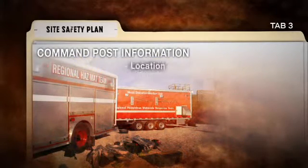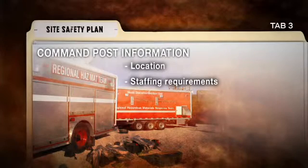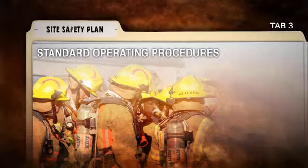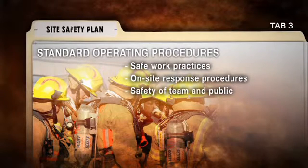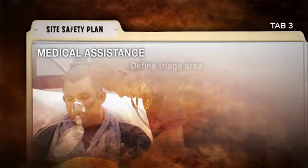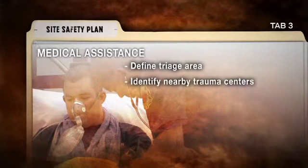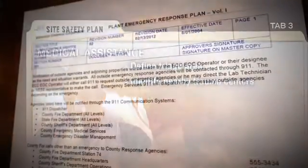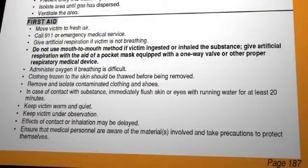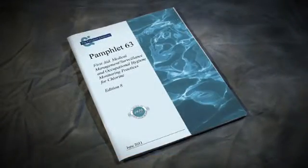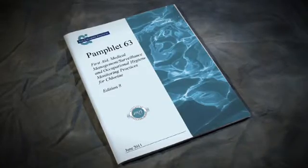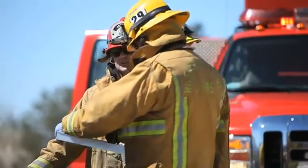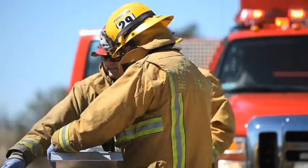Command post information, such as location and staffing requirements, will be identified in the plan. Standard operating procedures, as they pertain to emergency response, will detail safe work practices and on-site response procedures, all designed for the safety of the team and the public. Medical assistance information will define a triage area and identify trauma center locations, distances, and availability. The site safety plan can include, ahead of time, where to find medical treatment techniques for known hazards, such as how to treat for chlorine inhalation, including reference to Pamphlet 63, First Aid, Medical Management and Surveillance and Occupational Hygiene Monitoring for Chlorine. The plan must be updated during an incident to note the location of medical monitoring and treatment areas.